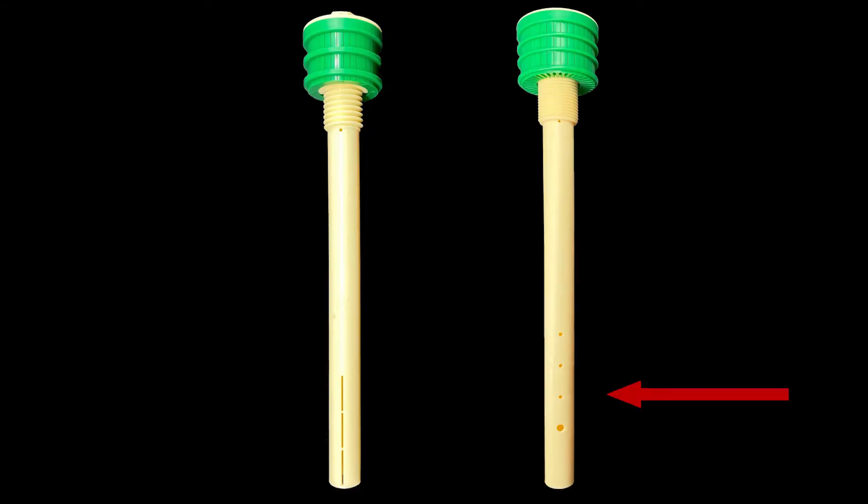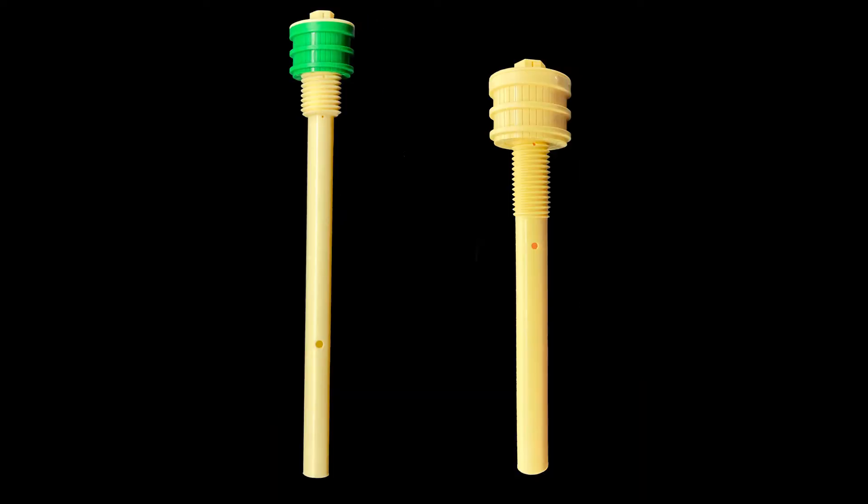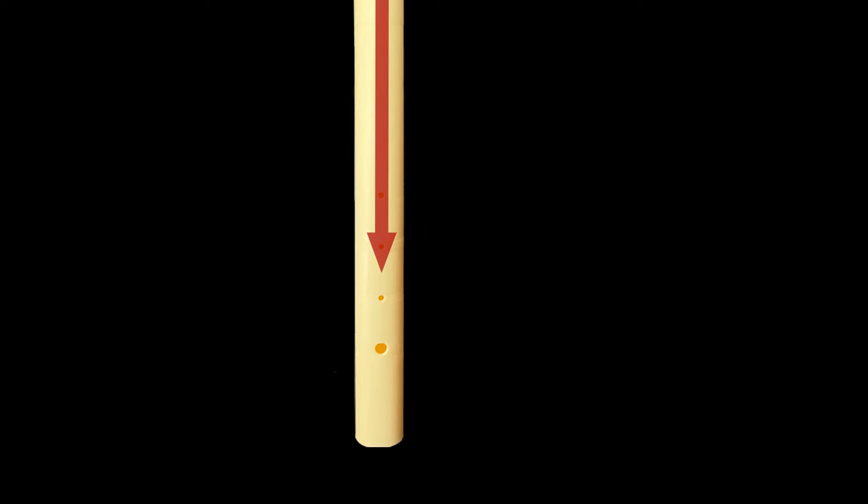Scour air enters the nozzle through metering holes or slots manufactured in the nozzle tailpipe. The size and location of these holes determine the depth of the air blanket at a specific airflow rate per nozzle.